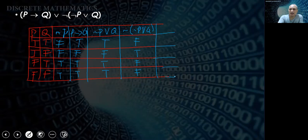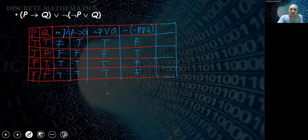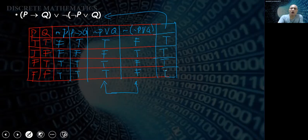The final result combines P implies Q with not (not P or Q) using 'or.' True or false is true. True or true is true. True or false is true. True or true is true. So all four rows are true. That is the result of evaluating that expression using the truth table.